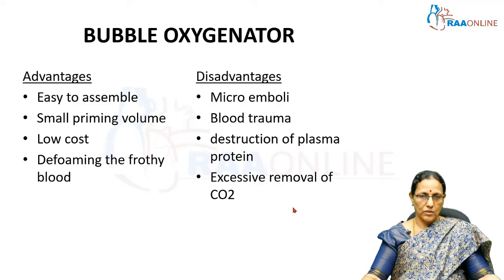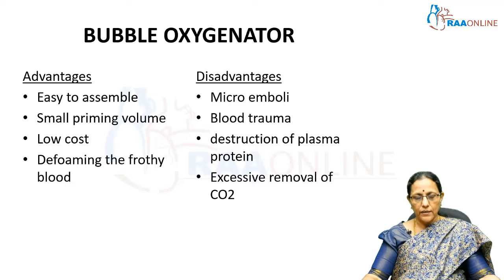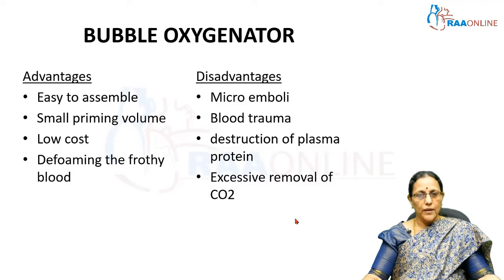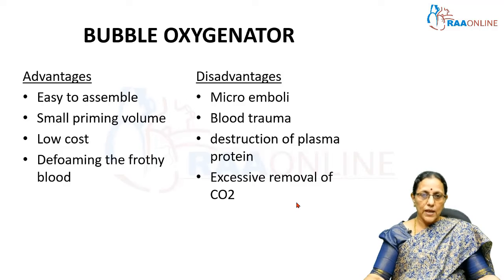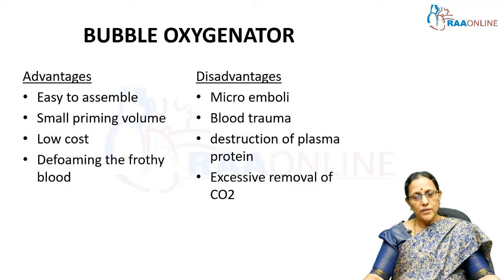What were the disadvantages of a bubble oxygenator? Since there was direct interface of gas and blood, blood trauma was more and plasma protein destruction was also seen. Though there were advantages like easy assembly and lower cost, because of direct bubbling of oxygen the pCO2 could not be controlled and the pO2 also could not be controlled — there was hyper-oxygenation and excess removal of carbon dioxide. So carbon dioxide removal could not be maintained with this bubble oxygenator, and researchers wanted to develop a more physiological oxygenator.